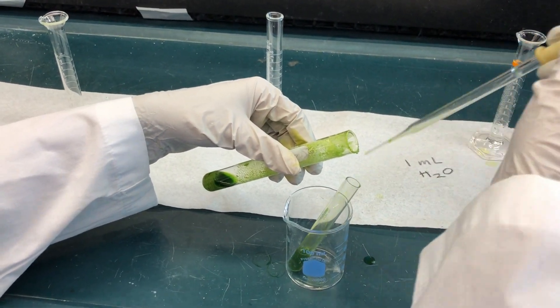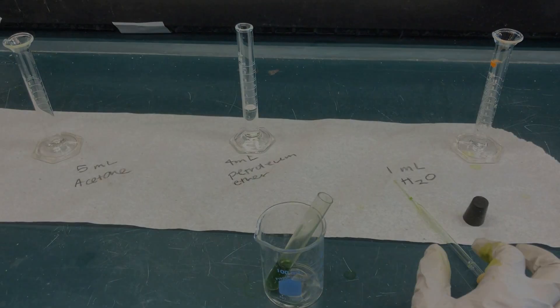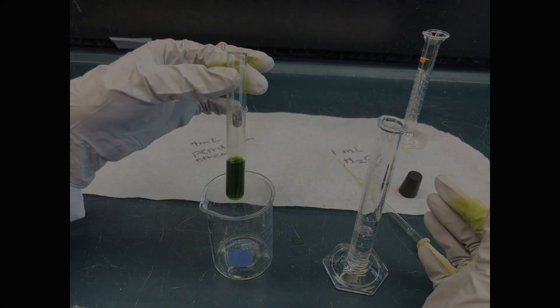Use a pipette to transfer as much of the liquid as possible into a clean, small test tube. The pigments will be in the acetone.